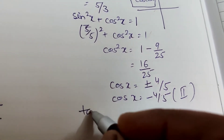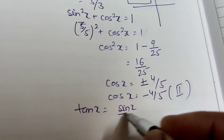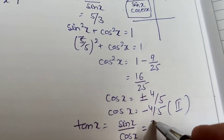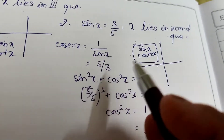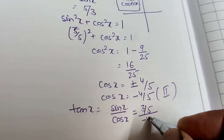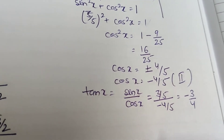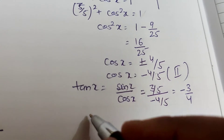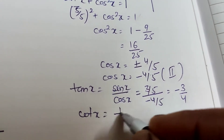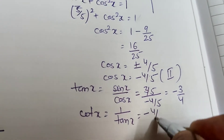Then tan x = sin x/cos x = (3/5)/(-4/5) = -3/4, which is negative as expected in the second quadrant. And cot x = reciprocal of tan x = -4/3.